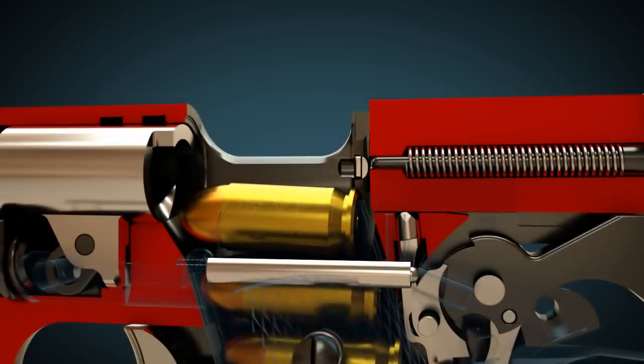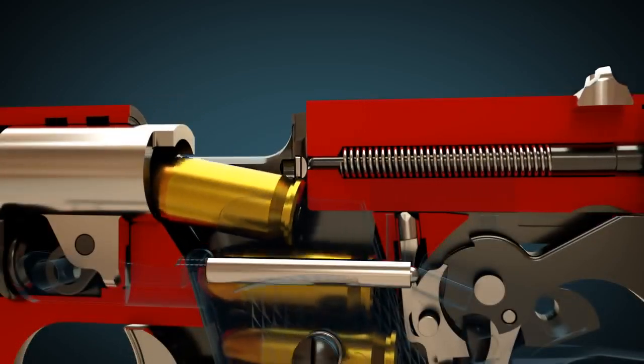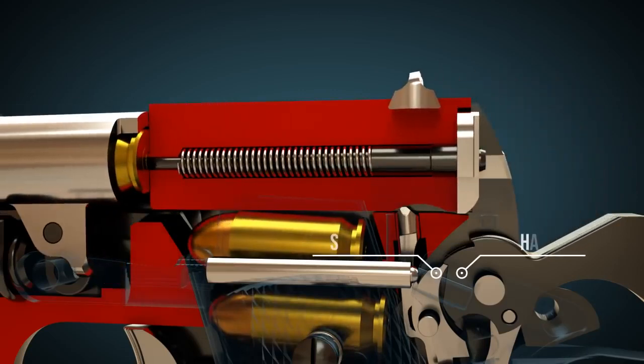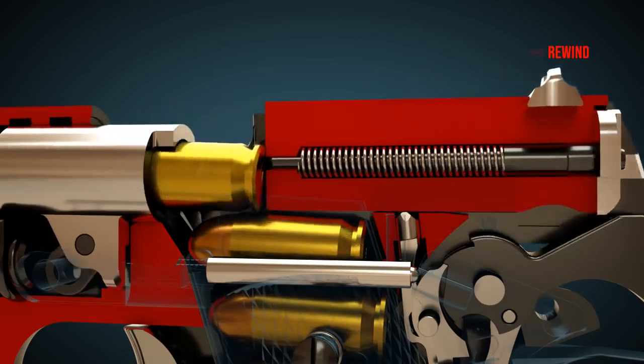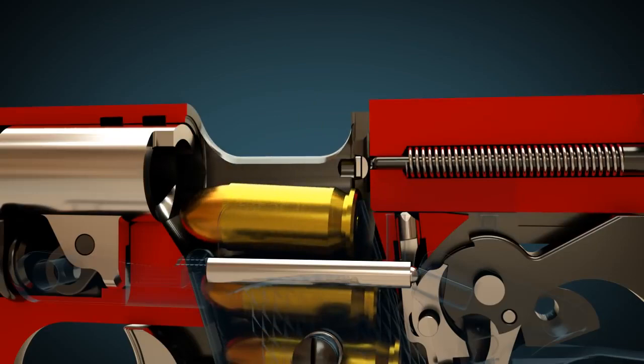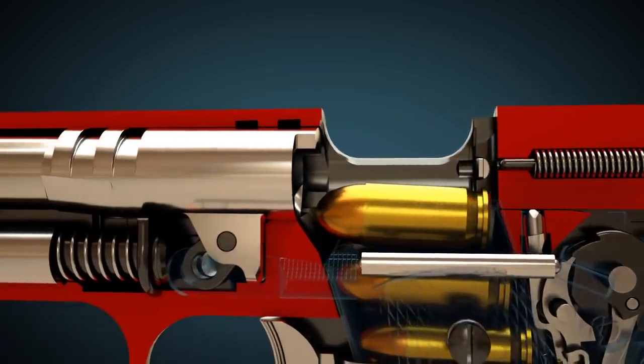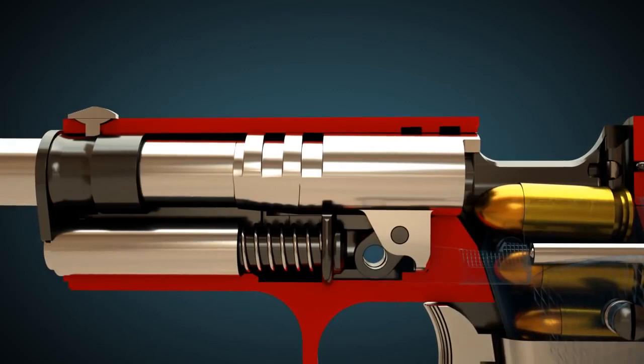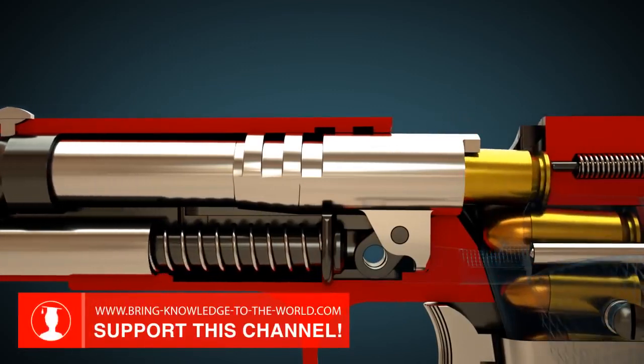As soon as the slide is released, the tension recoil spring pushes the slide forward. The slide takes the cartridge with it and pushes it into the gun barrel. The hammer remains cocked thanks to the sear. The gun barrel returns to its initial position. The gun is now loaded and cocked.